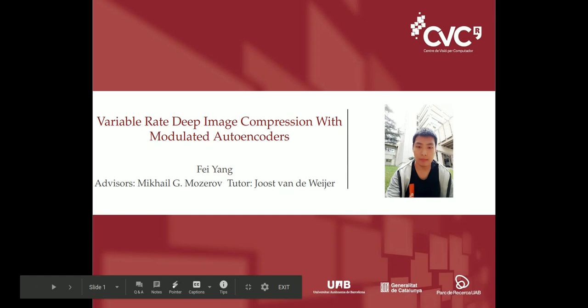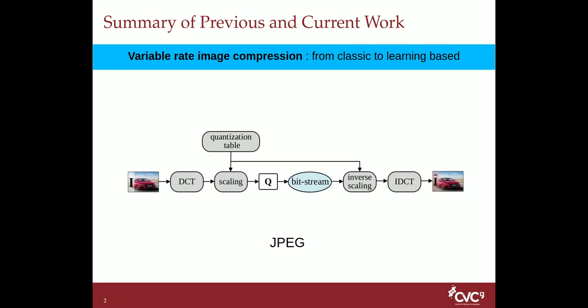Hello everyone, I am Fei Yang. I will present my work on Variable Rate Deep Image Compression with Modulated Auto-Encoders. Our goal is realizing variable rate in a deep image compression framework. This is easy for classic methods. For example, JPEG uses one quantization table to scale the coefficients of DCT transformation, and then can control how much information you want to preserve after quantizing. When the decoder receives the bitstream, it uses this quantization table again to obtain the true DCT coefficients for reconstruction.